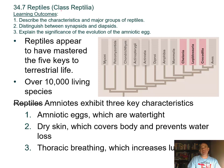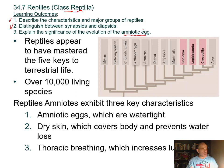This section covers the class Reptilia. The learning outcomes are to describe the characteristics and major groups of reptiles, distinguish between synapsids and diapsids, and explain the significance of the evolution of the amniotic egg—which was the key adaptation allowing animals to fully move onto land, analogous to the seed in the plant world.